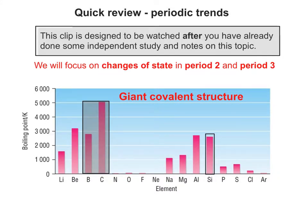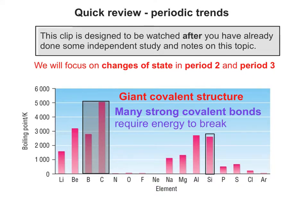Boron, carbon and silicon are what we call a giant covalent structure. This means many strong covalent bonds are present, which require energy to break.